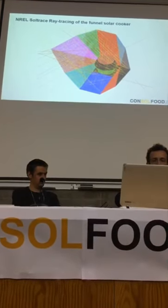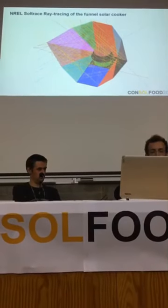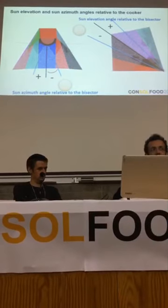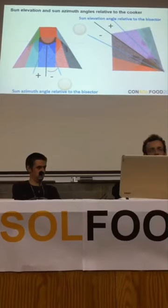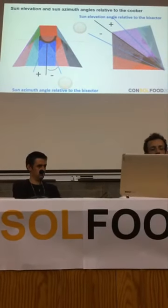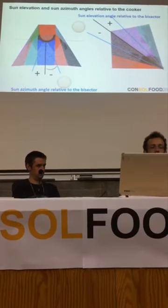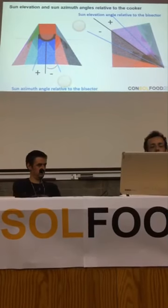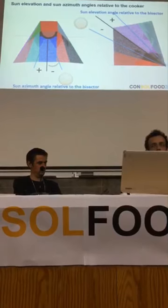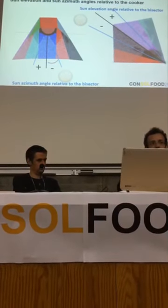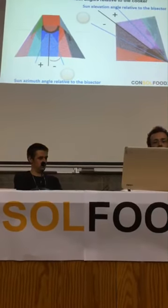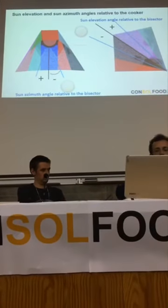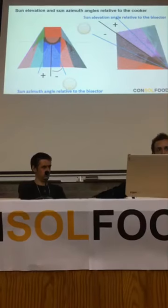In order to do some analysis of the optical efficiency, we have to define two important angles. We have the sun-azimuth angle related to the bisector — we take the bisector of the funnel as the reference line or reference plane. And we have the sun-elevation angle related to the bisector. Our funnel has an elevation angle of 40 degrees from the horizontal.